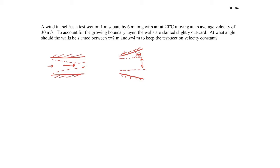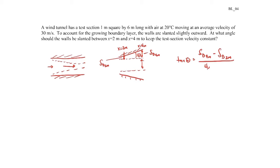So what we want to do is at x equals 2 meters, we want to find what that displacement thickness is there, and then also at x equals 4 meters. And then to find the angle, it'll be the tangent of theta is the difference in those displacement thicknesses divided by the distance between them, which would just be 4 meters minus 2 meters. So we need to find the displacement thickness.